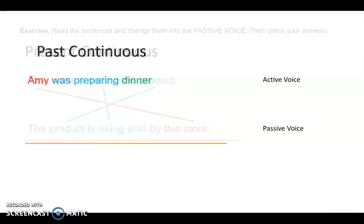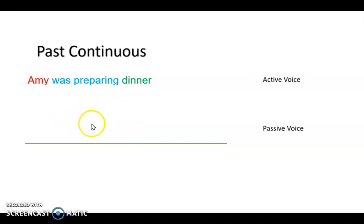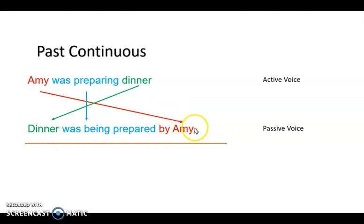Let's continue with the next one — it's a past continuous sentence. Active voice: 'Amy was preparing dinner' — Amy estaba preparando la cena. Now it's your turn — change it into passive voice. Pausa el video unos segundos. The answer is: 'Dinner was being prepared by Amy' — la cena estaba siendo preparada por Amy.